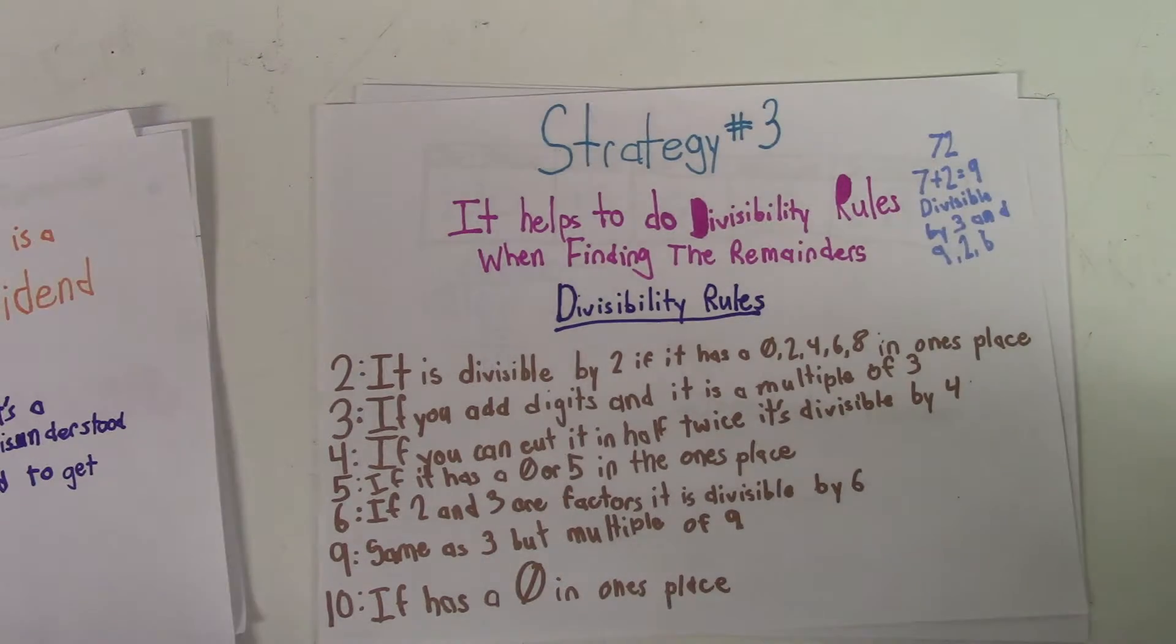Imagine you have the divisor of 72, the start number of 72. And you do one of the rules.